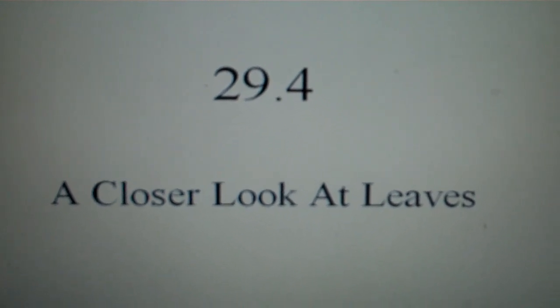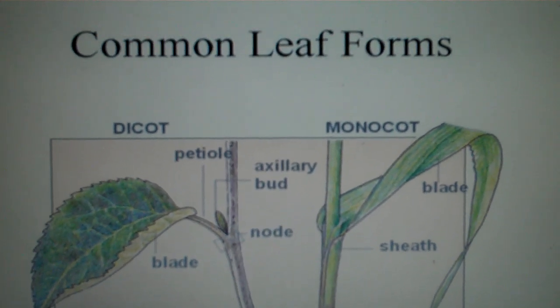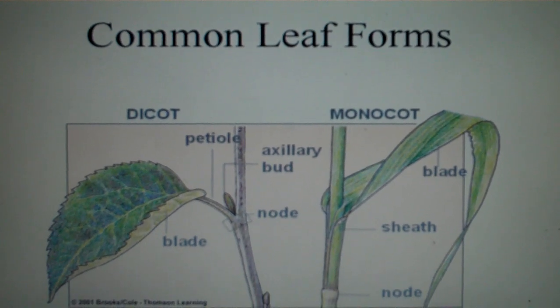A closer look at leaves. We have two types of plants: dicot and monocot.